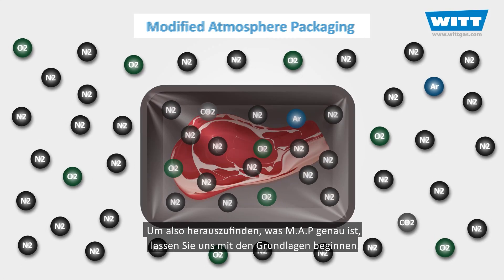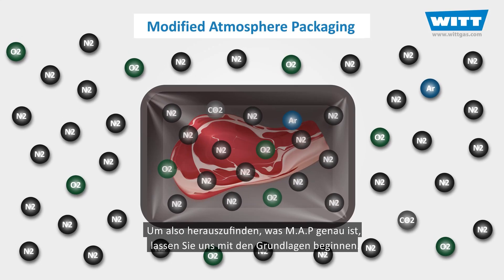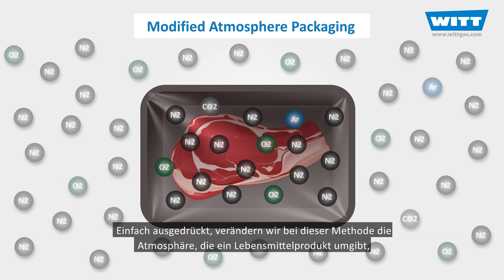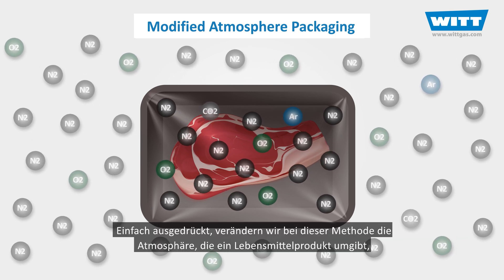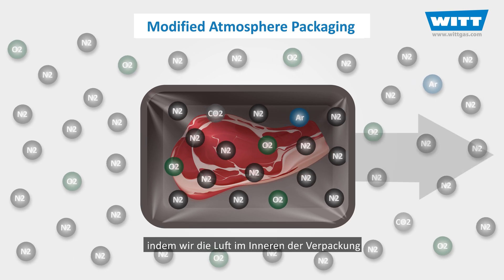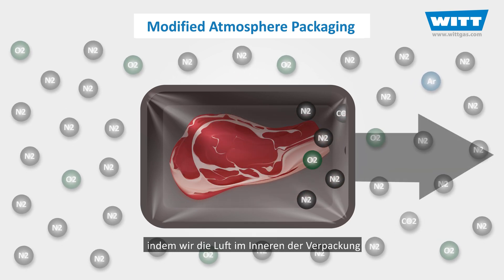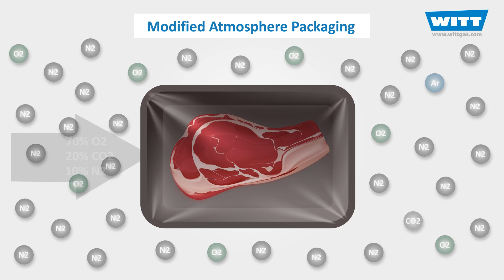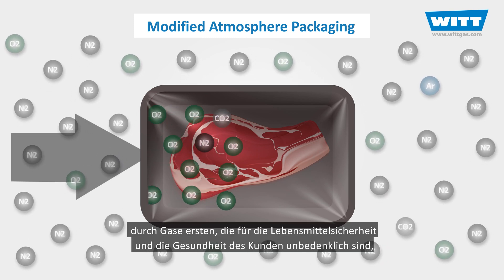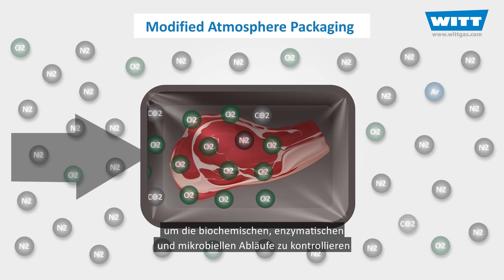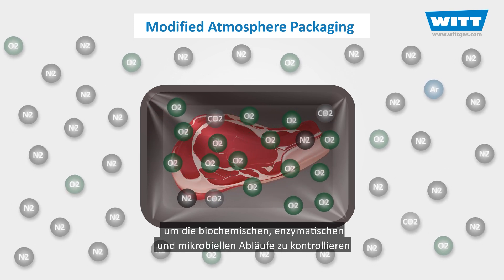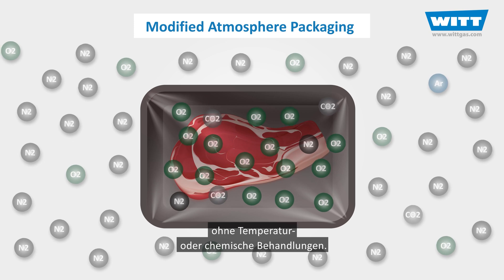To figure out what MAP exactly is, let's start with the basic concepts. Simply put, in this method we modify the atmosphere surrounding a food product by removing the air inside of its package and then adding gases that are safe for both food and customers' health, to control the biochemical, enzymatic, and microbial actions without temperature or chemical treatments.